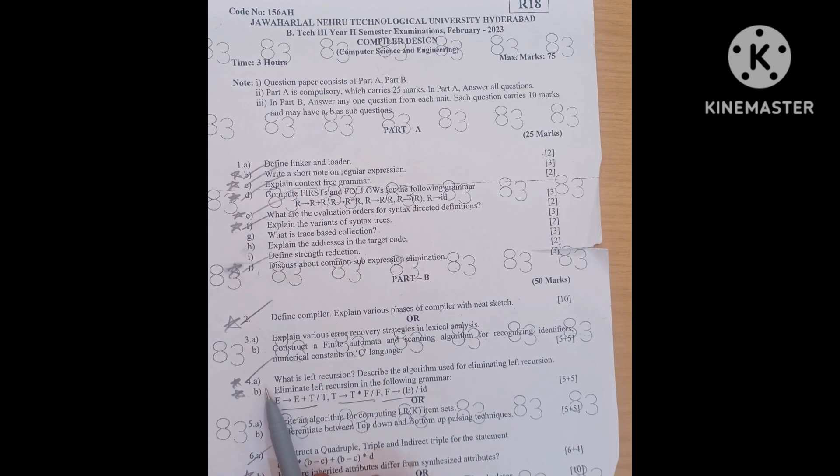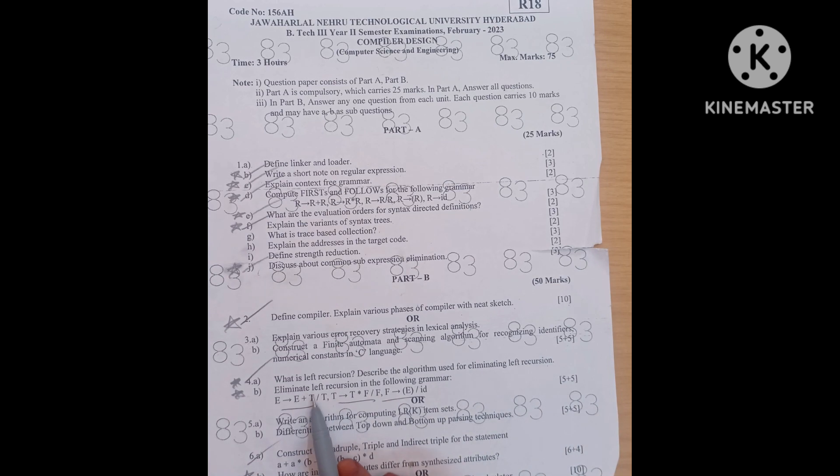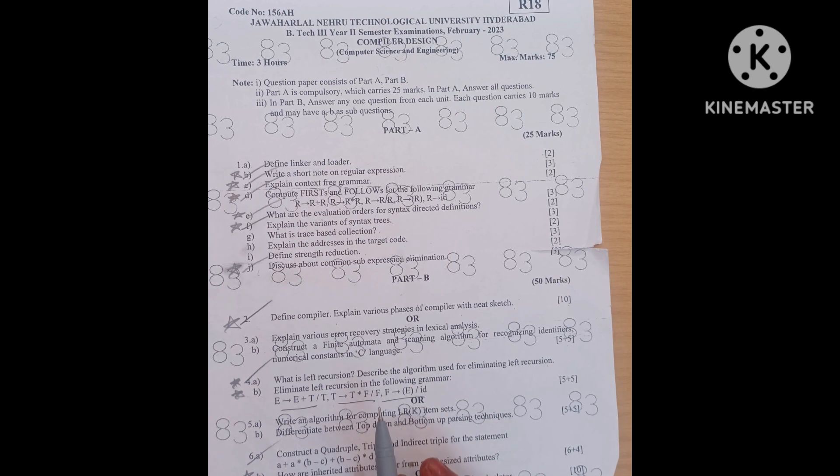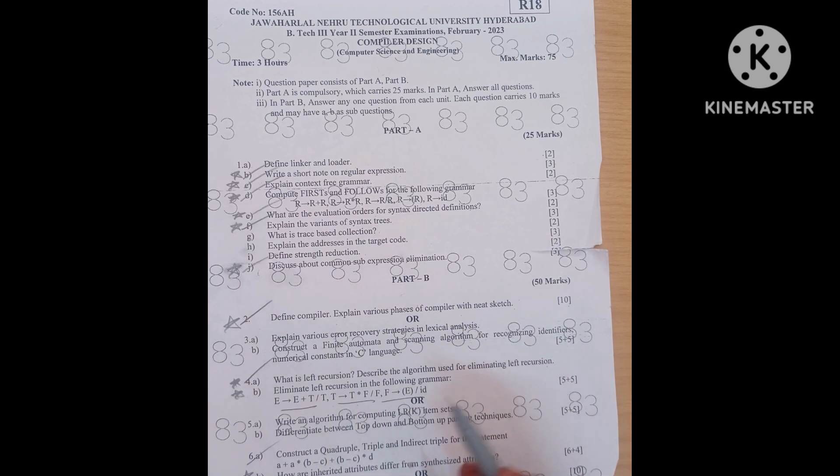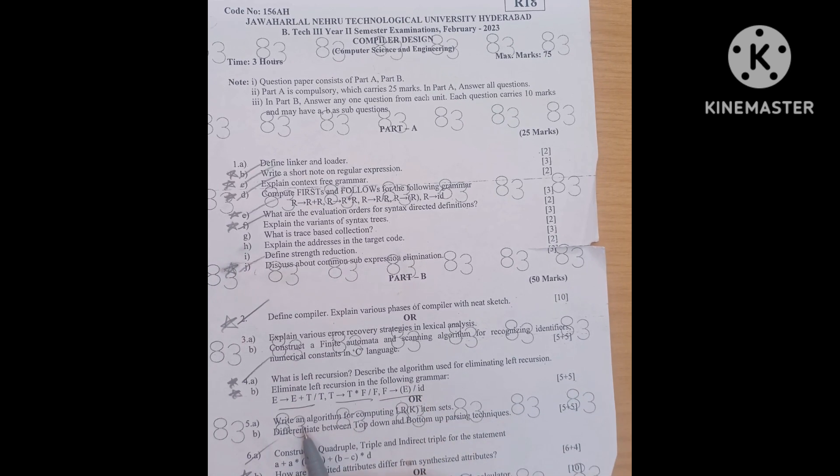Unit 2 questions are A, what is left recursion? Describe the algorithms used for eliminating left recursion, 5 marks question. And B is eliminate left recursion in the following grammar. Explain same thing. We learn how to eliminate left recursion. Example either same example are coming or sometimes example will be changed. That is also 5 marks question, or write an algorithm for computing LR K item sets, that is 5 marks, and differentiate between top down and bottom of parsing techniques, 5 marks questions.